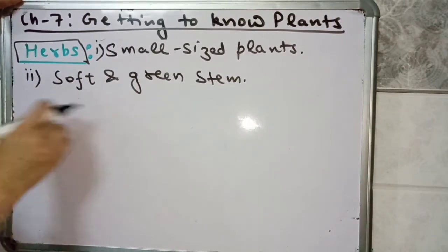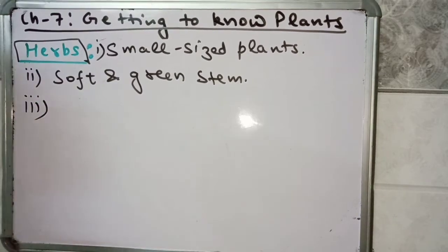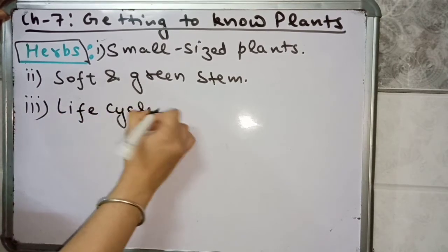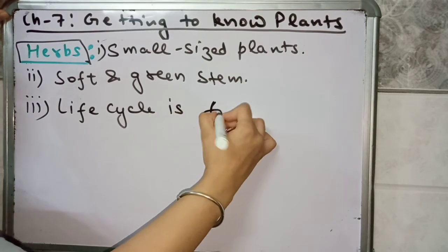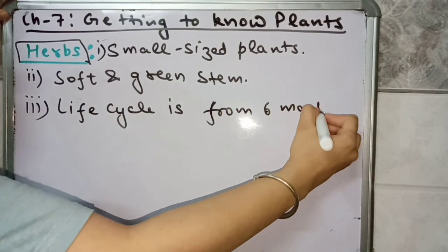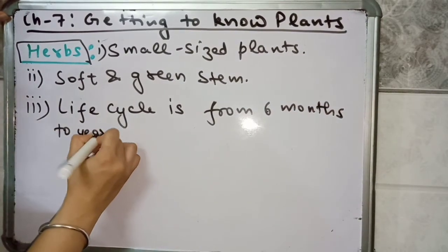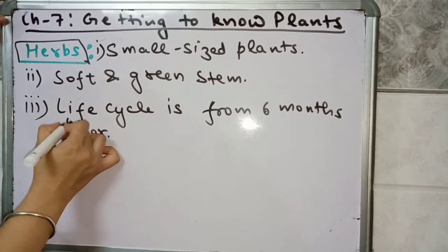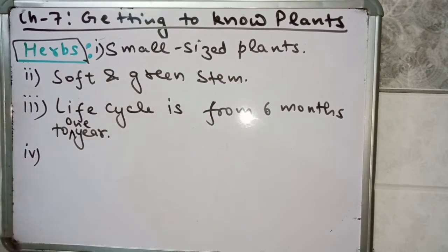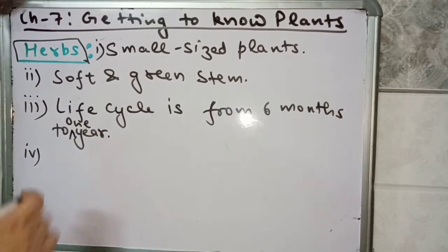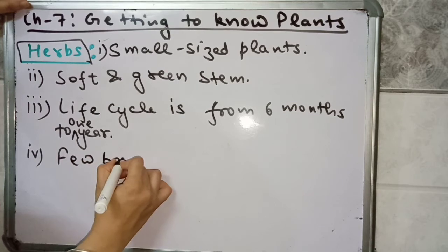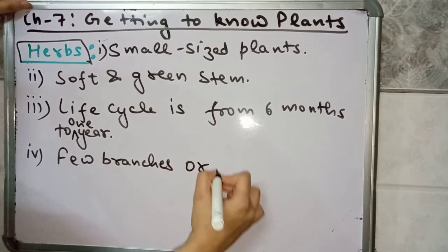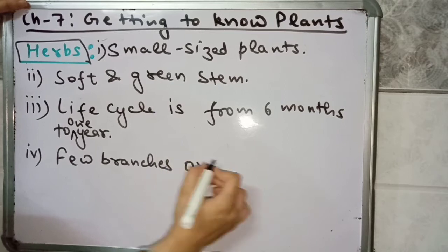The third characteristic of a herb plant is its life cycle — its life cycle is from 6 months to 1 year. The next characteristic is that there are very few branches in herb plants, or some herb plants are branchless also.